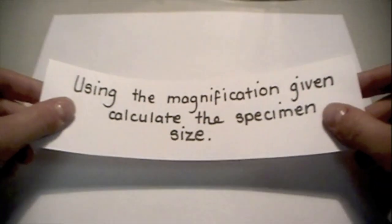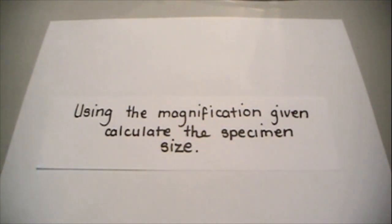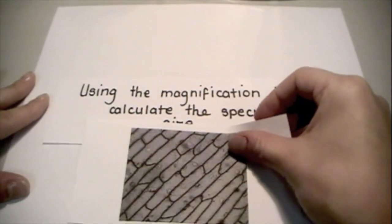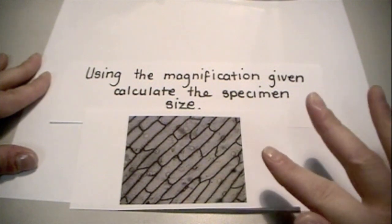So let's review what we've just done. We have so far used the magnification given to calculate the specimen size, and we had a specific image for that. These were our onion cells right here, and they were magnified by 100.